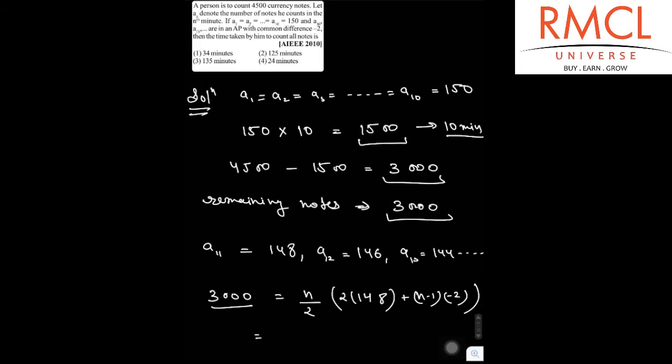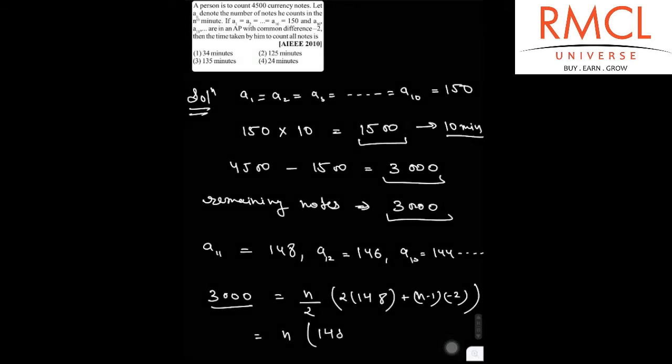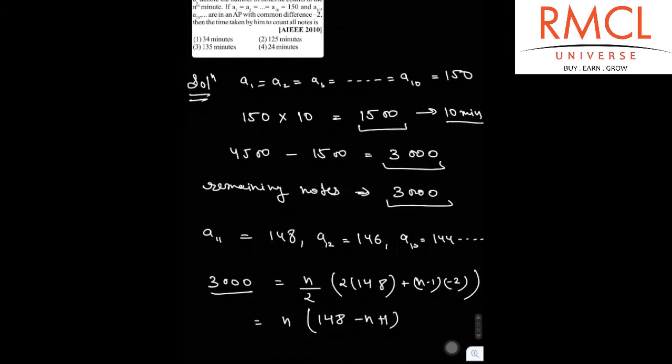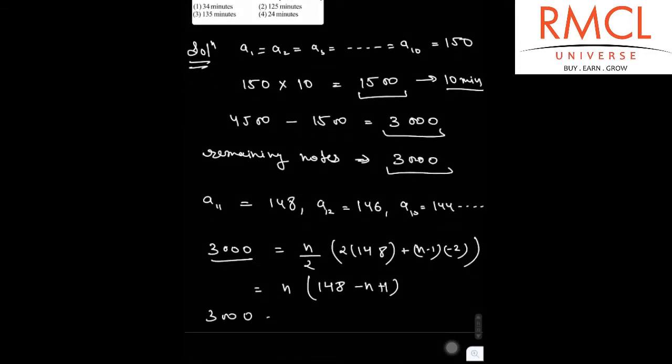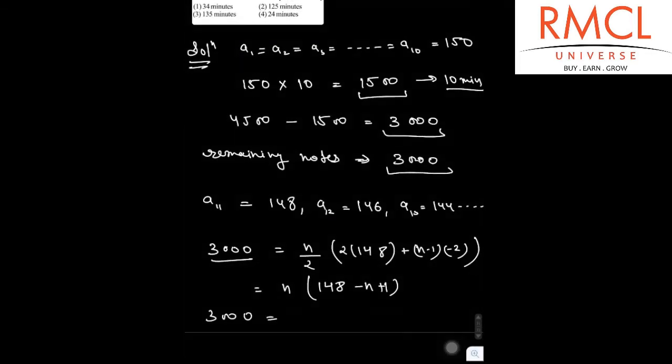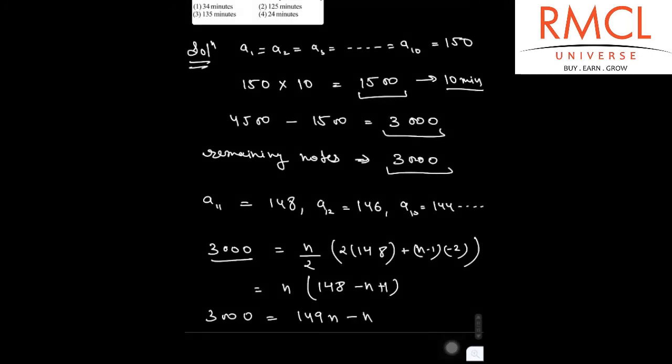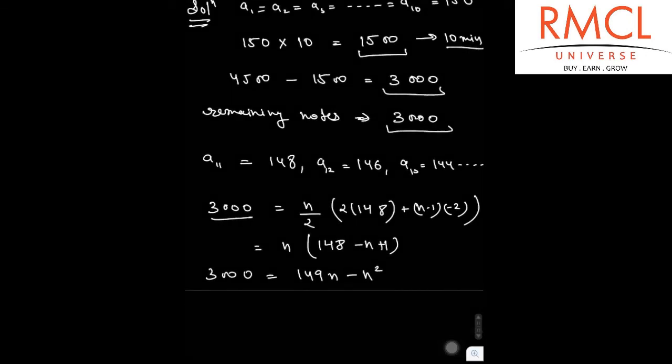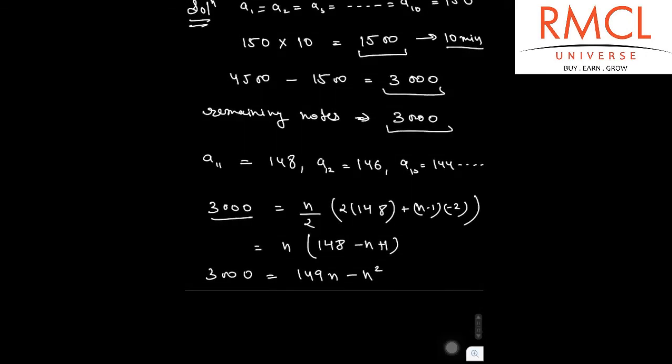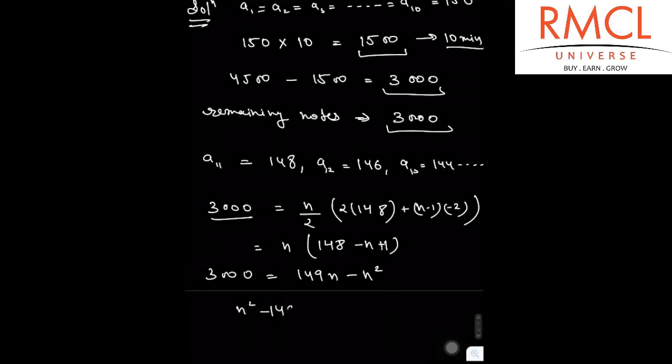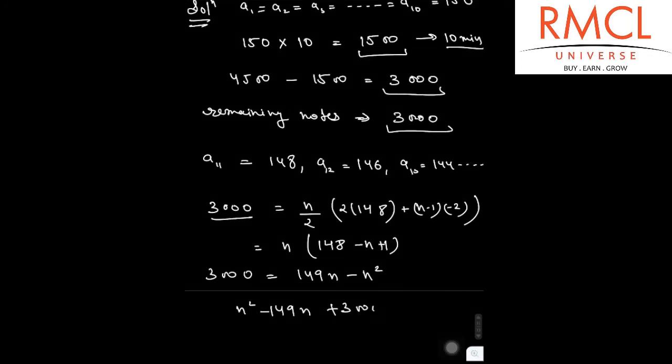So this is N times 148 minus N plus 1. So 3000 equals 149N minus N square. So this is the quadratic equation in terms of N. This is N square minus 149N plus 3000 equals 0.